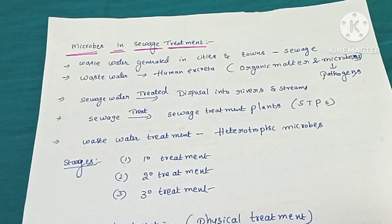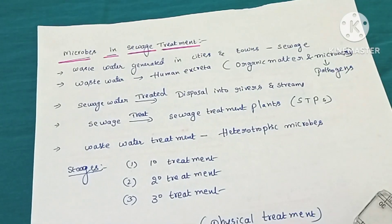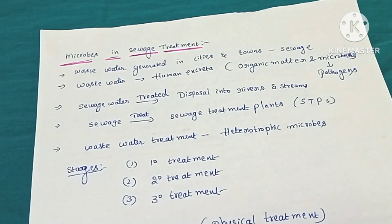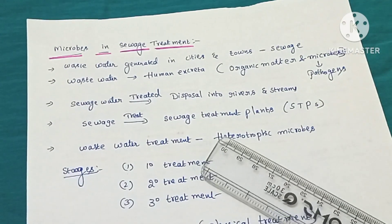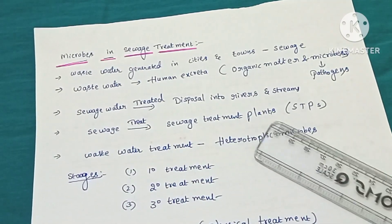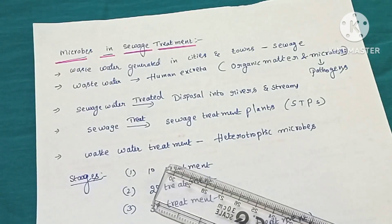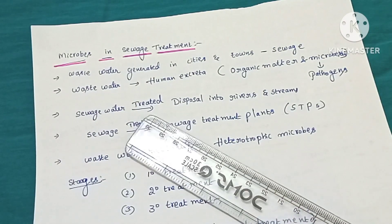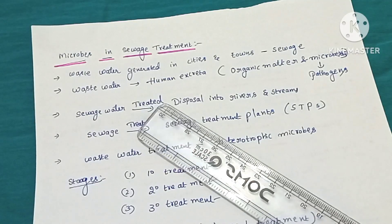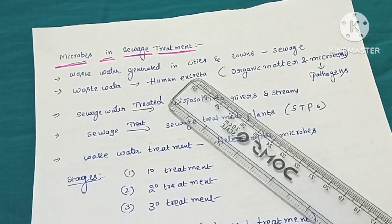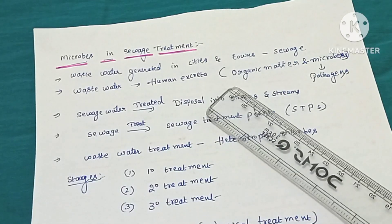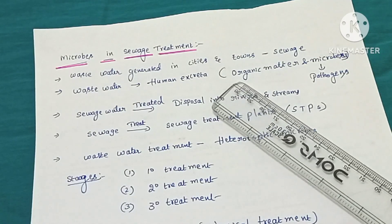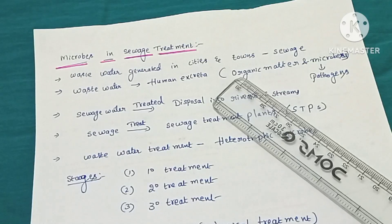Hello everyone, this is Latha Akula. In this video we are going to study about another concept in microbes in human welfare — that is microbes in sewage treatment. Everyday, gallons of waste water are generated in cities and towns. That municipal waste water is called sewage. The major component of sewage is human excreta, which consists mainly of organic matter and several pathogenic microorganisms — meaning disease-causing microorganisms.